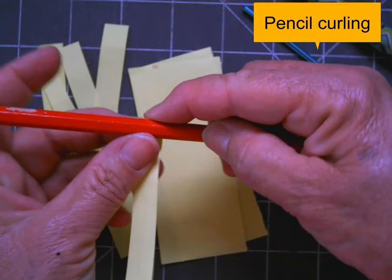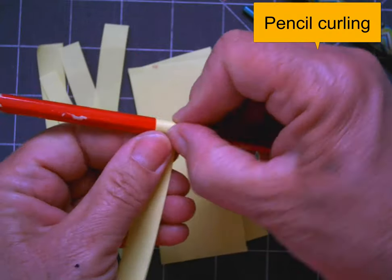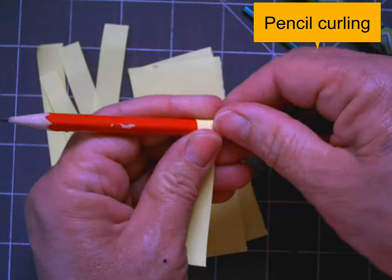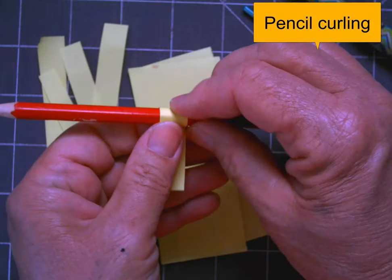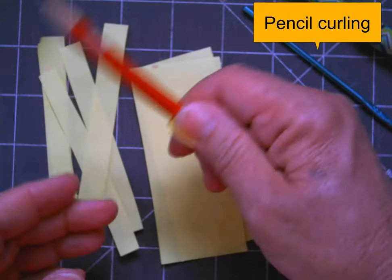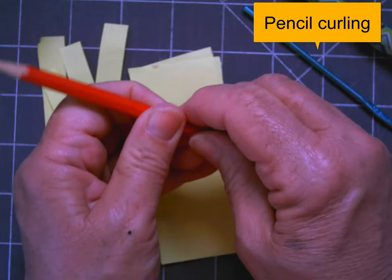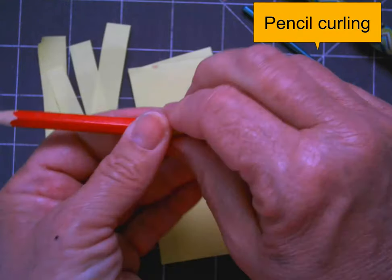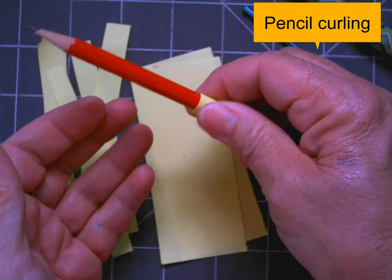The first way that you can curl paper is pencil curling. All you need to do is wrap it tightly around a pencil or any kind of a cylinder and apply friction. Whether you roll it back and forth in your hands or heat it a little bit, any kind of friction will encourage it to hold that curl.